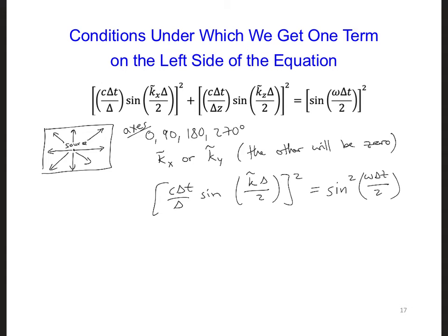For this case, if we solve for k, we would take the square root of the entire equation, and ultimately we would get k tilde is 2 over delta arc sine delta over c delta t times sine omega delta t over 2.